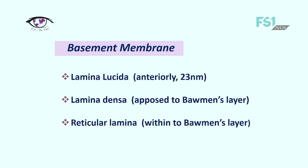Basement membrane: the basement membrane is secreted extracellularly by the epithelial cells and forms one of several structural components associated with cell adhesion to Bowman's layer or stroma. As you can see in this slide, the basement membrane consists of three layers: lamina lucida, lamina densa, and reticular lamina. The reticular lamina is located within Bowman's layer.